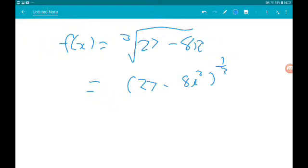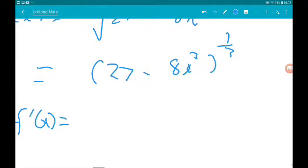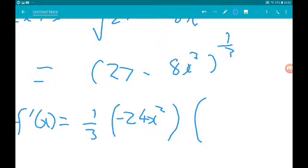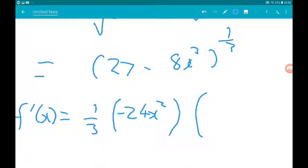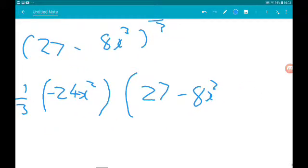So we can use the chain rule to differentiate. So f'(x) is going to be one third times, now the bracket is going to differentiate to minus 24x squared. And then the power goes down by one. So that's going to be 27 minus 8x cubed to the minus two thirds.